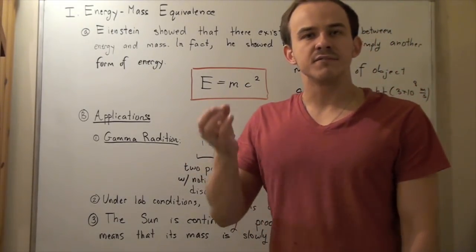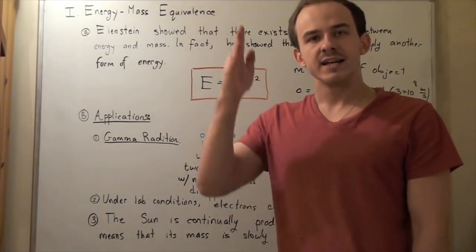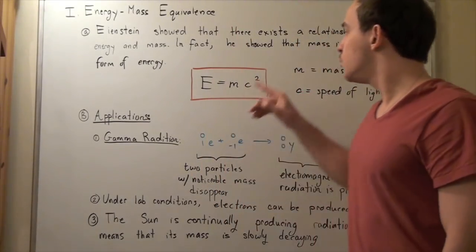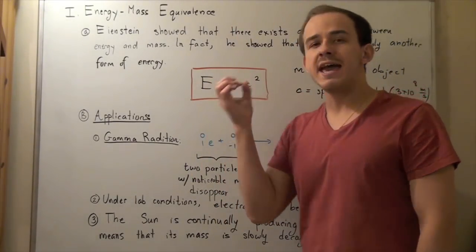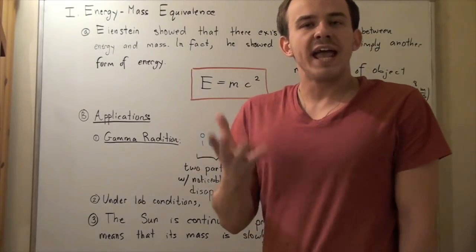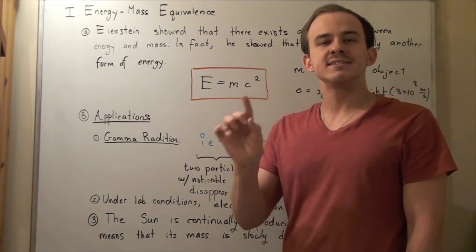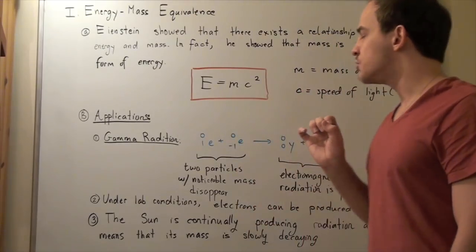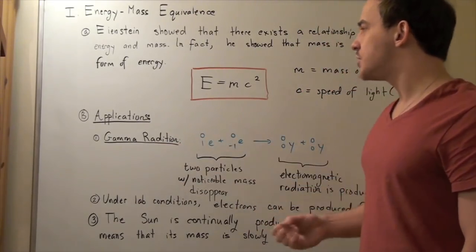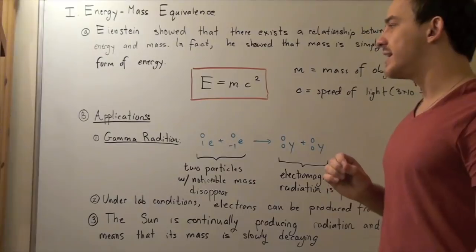C is simply the speed of light, 3 times 10 to the 8 meters per second. You square that, and you find the energy in joules of any mass that is stationary, meaning it's not moving. Many different applications of this equation exist.